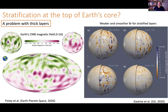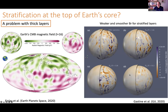On the right here we have simulations by Tom Gastine and co-authors — dynamo simulations with different thicknesses and strengths of stratified layers at the top of the core. On the left we have Earth's present-day magnetic field projected at the core-mantle boundary, and on the right these simulations showing radial magnetic field. For a fully convective simulation there's lots of small-scale structure, but as you introduce an increasingly strongly stratified layer, the shutdown of convection results in a much weaker and much smoother radial magnetic field at the top of the core — something that just does not look much like Earth's present-day field.